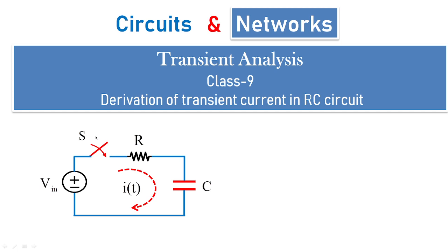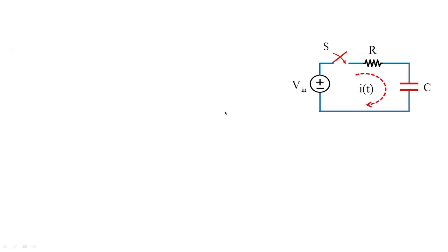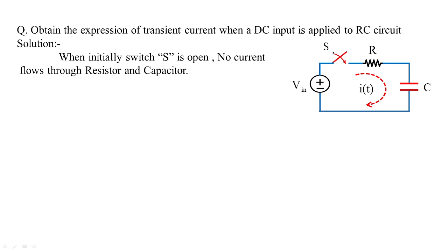Previously you can see the switch is open — no current flows into the network and naturally no parameter is going to receive any kind of energy. During the initial conditions the switch is open, so naturally no current will flow through resistor or capacitor, and hence no voltage is developed across resistance as well as capacitance. There is no voltage across resistance and no voltage across capacitance when the switch is open.